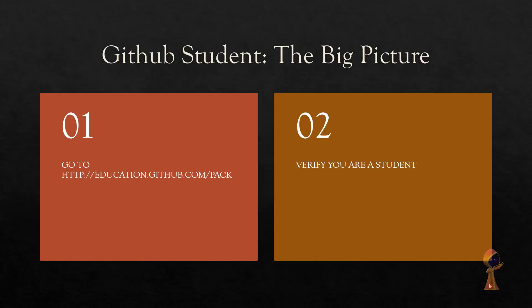Let's go to the big picture of getting the GitHub Student account. First, you go to a website called education.github.com/pack — the link is in the description — and you need to verify that you are a student.